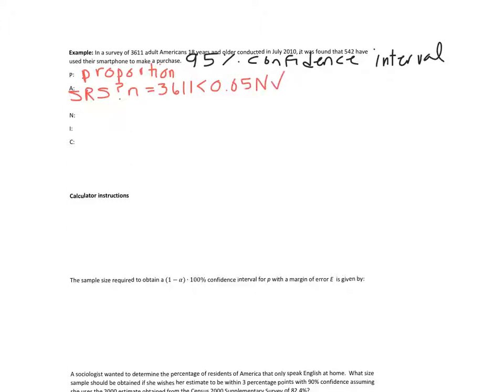And then finally, let's do n, sample size, times p-hat, times 1 minus p-hat. Let's make sure that's greater than or equal to 10. And it is. It's about 461. So that is greater than or equal to 10. So that's your last assumption.